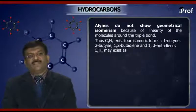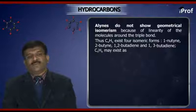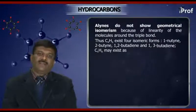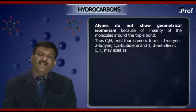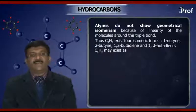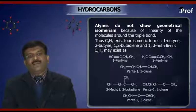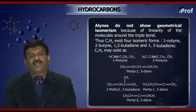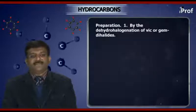Therefore, C4H6 may exist in four isomeric forms: 1-butyne, 2-butadiene, 1,2-butadiene, and 1,3-butadiene. C5H8 may exist as 1-pentyne, 2-pentyne, penta-1,3-diene, 2-methyl-1,3-butadiene, penta-1,2-diene, and penta-2,3-diene.